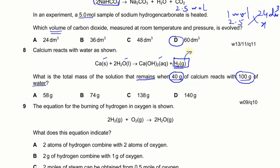Calcium has an atomic mass of 40, so 40 g = 1 mole of Ca. Water: 100 ÷ 18 = 5.5 moles. The equation requires 1 mole Ca to 2 moles water, so water is in excess and calcium is the limiting reactant. One mole of Ca produces 1 mole of H₂, and 1 mole of H₂ has a mass of 2 g. So 2 g of hydrogen escapes, leaving 140 − 2 = 138 g.